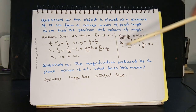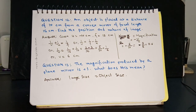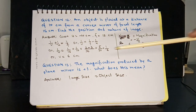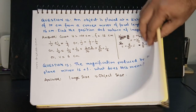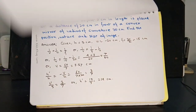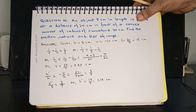Question 13: The magnification produced by a plane mirror is +1. What does this mean? This means that the image size is equal to the object size.